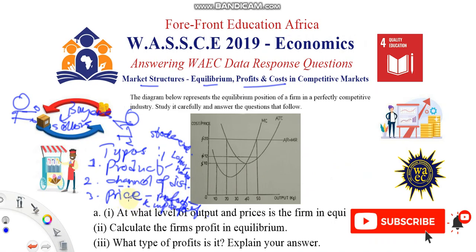In perfect competition — the market structure we are studying — characteristics include many buyers and sellers and easy entry or exit. In imperfect markets, however, buyers and/or sellers can influence the price. Examples include monopoly, monopolistic competition, duopolies, and oligopolies, where just a few key sellers control the market.